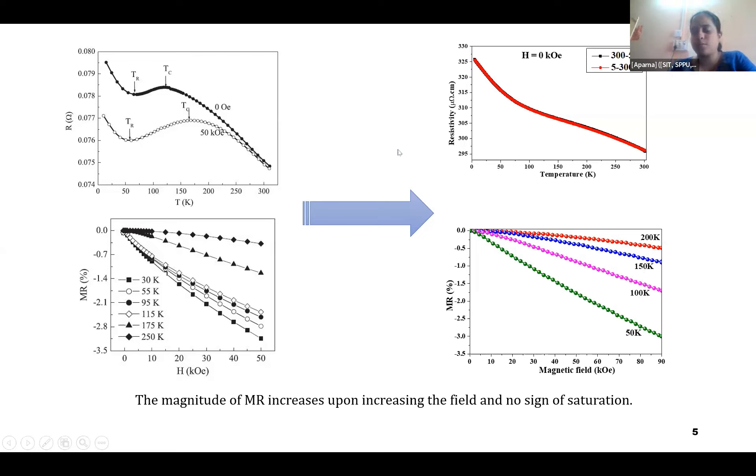These were some of the starting studies that we have done on this material, and we are further trying to go for further measurements for understanding. Through AC susceptibility measurements we can understand what is the spin glass behavior that has been obtained in this material, and further annealing the sample can also lead to get a better homogeneous structure without any FCT disorder or tetragonal distortion.